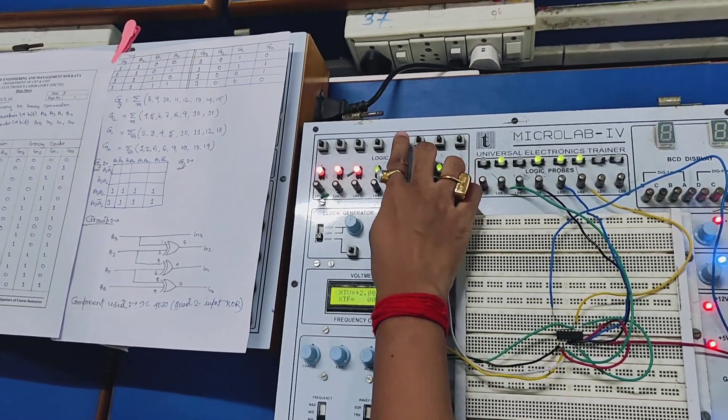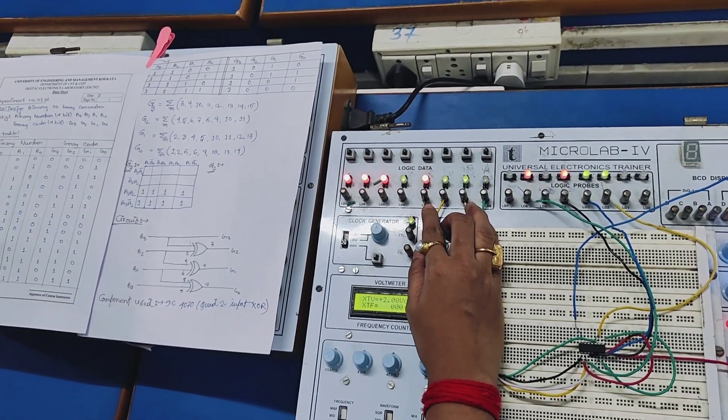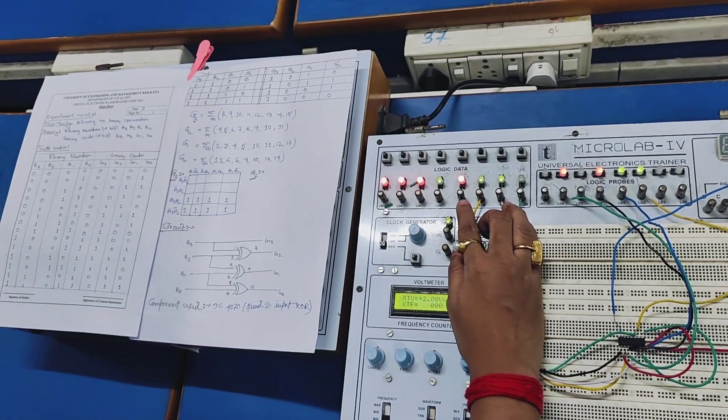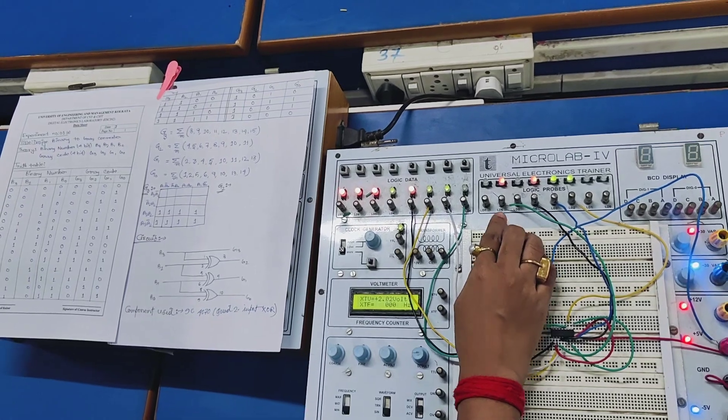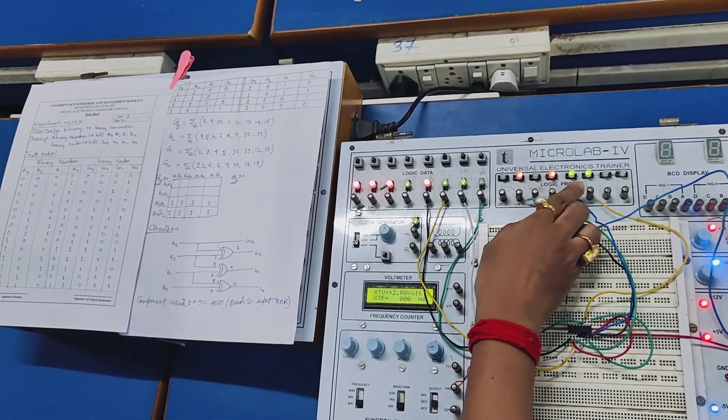Now we are putting decimal number 8 in the binary which is 1000 and we get the Gray code 1100.